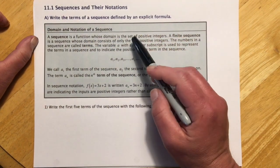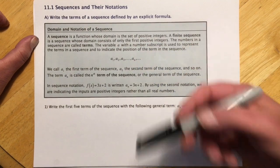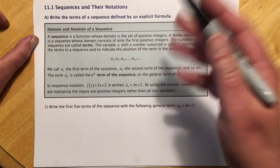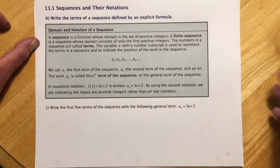A sequence is a function whose domain is a set of positive integers, so sequences have kind of a counter, and they go 1, 2, 3, 4, 5. A finite sequence ends basically at some number, an infinite sequence, the counting goes on forever.